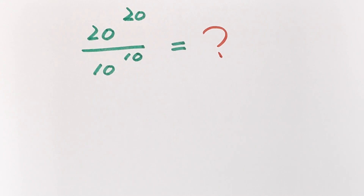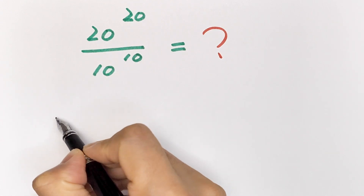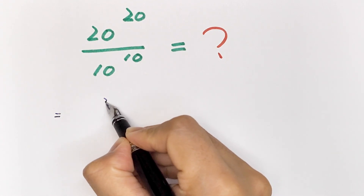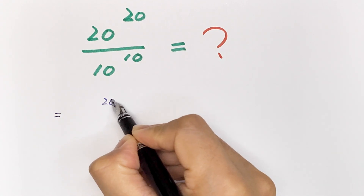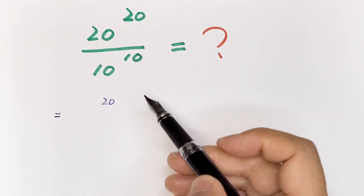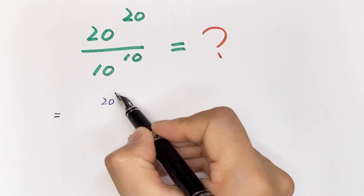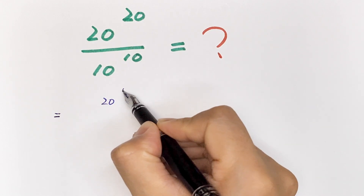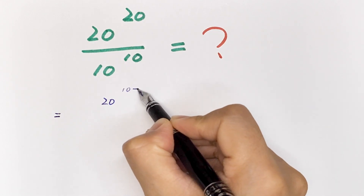Hello, welcome to Math for You. What is the value of 20 to the power of 20 over 10 to the power of 10? This is equal to 20 to the power of 20, seen as 10 plus 10 to the power of 20.